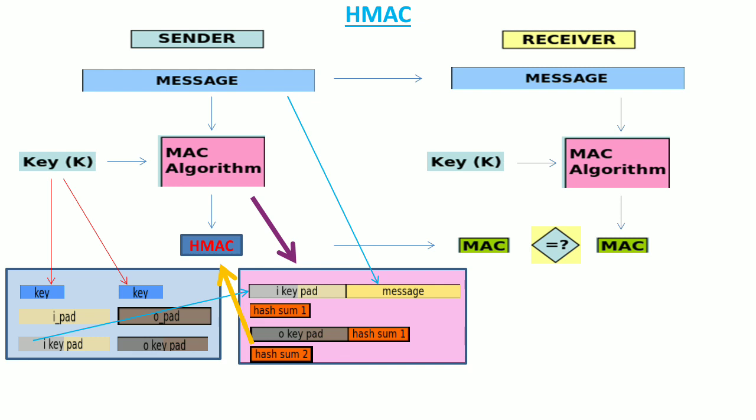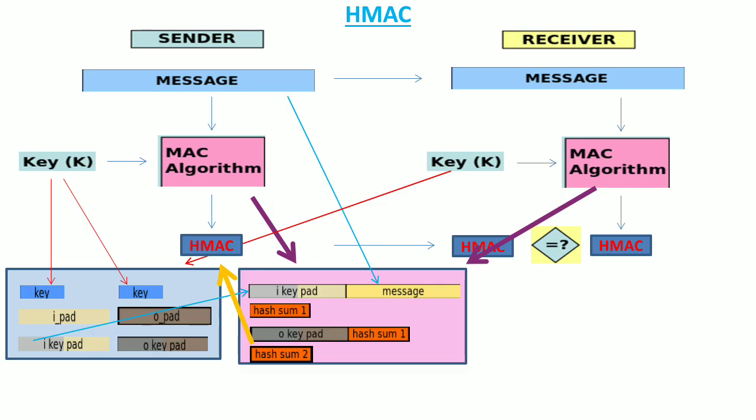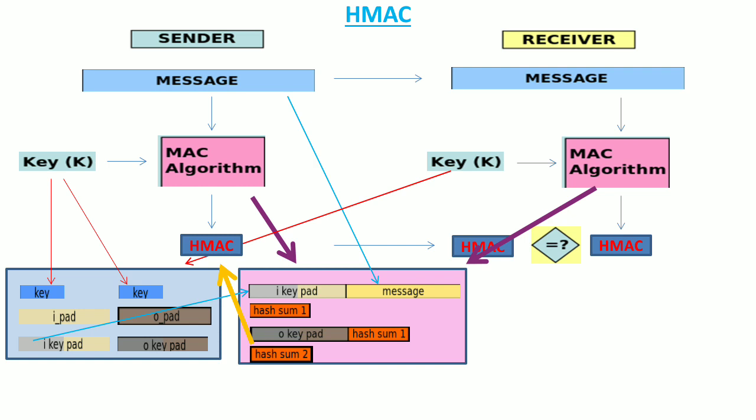This second hash is the Hash Message Authentication Code. After generating this HMAC, the sender sends it to the receiver. The receiver then carries out similar steps: he creates two sub-keys from the primary key, uses these two keys in series to generate his own HMAC, and then compares the received HMAC with the one he has generated. If both values are the same, the message has not been changed during transit and has come from the right party.